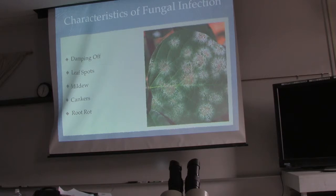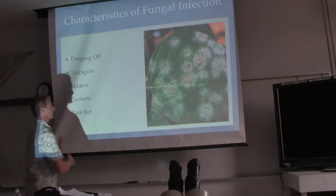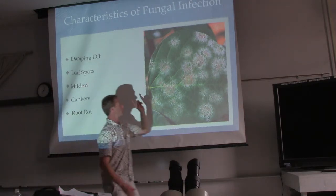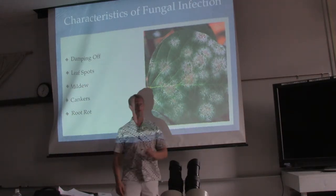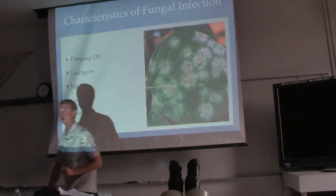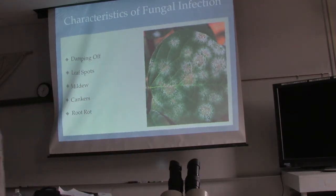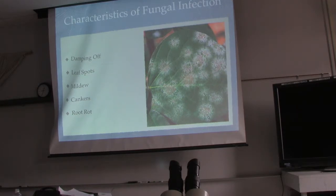Leaf spots can happen with bacteria as well, but fungal leaf spots are usually going to be circular. If you see a circular spot, 99% of the time it's going to be a fungus.